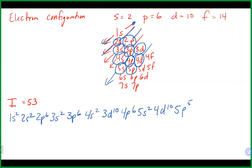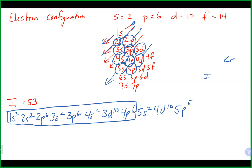We could also shorthand it. If we look at the periodic table, iodine is here and going backwards, krypton would be the last noble gas at 36 — that would be the shorthand. And then we would need to add 5s2, 4d10, 5p5 — that would be the shorthand version of the electron configuration for iodine.